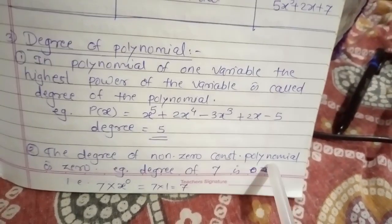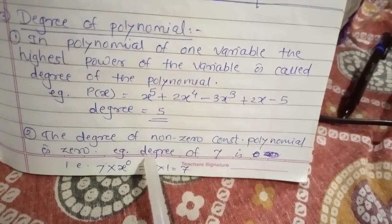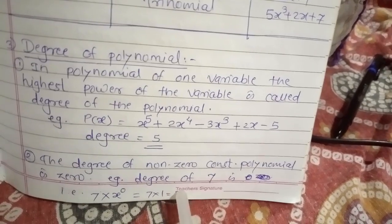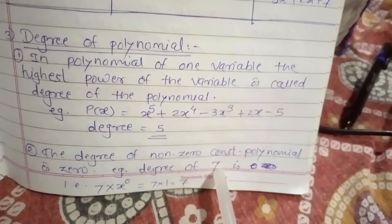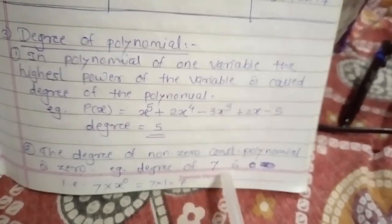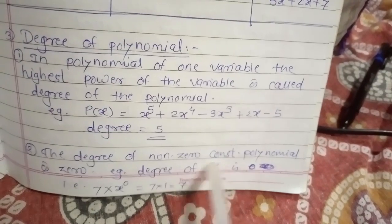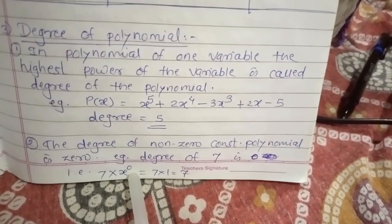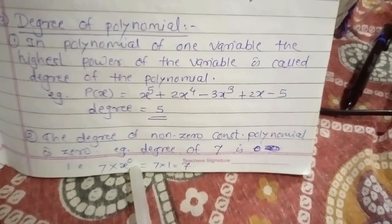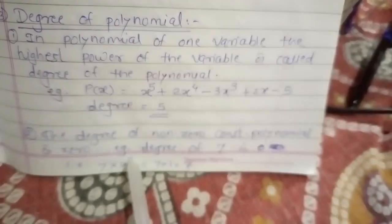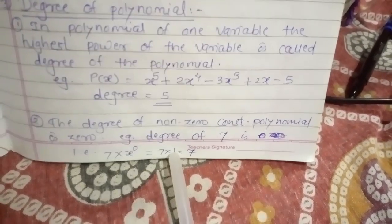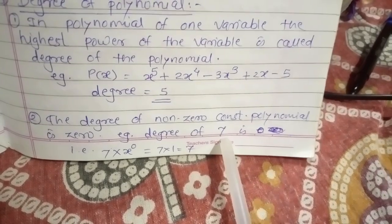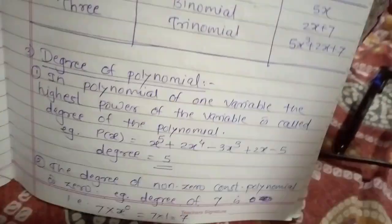The degree of a non-zero constant polynomial is 0. For example, if you are given only the number 7 and asked about its degree, the degree is 0, because 7 can be written as 7 × 1, and 1 = x^0 since anything raised to 0 is 1. So 7 = 7·x^0, and the degree of this is 0.